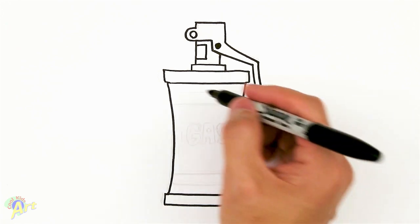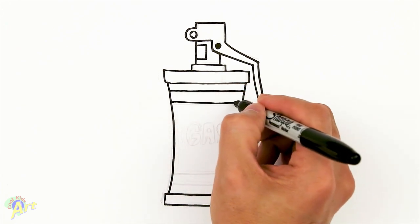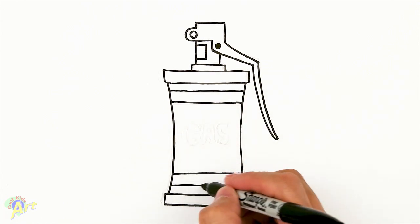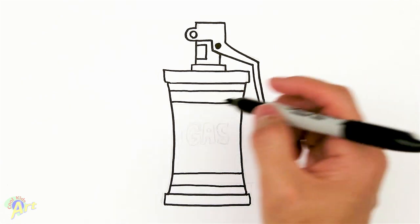Alright, and then let's see on the canister itself there's going to be two stripes. So that's going to be one yellow stripe and another yellow stripe on the bottom. And then it says gas, right? So we're going to draw in the bubble letters.